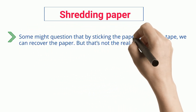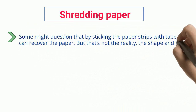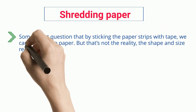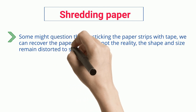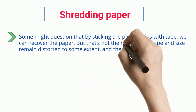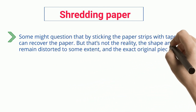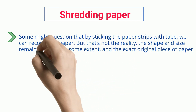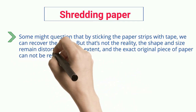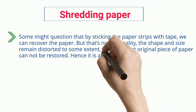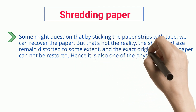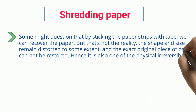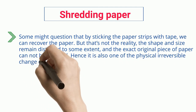But that's not the reality — the shape and size remain distorted to some extent, and the exact original piece of paper cannot be restored. Hence it is also one of the physical irreversible change examples.